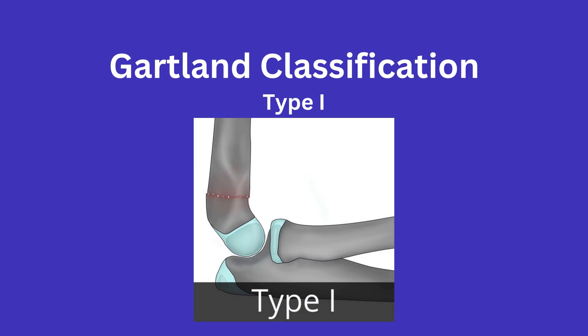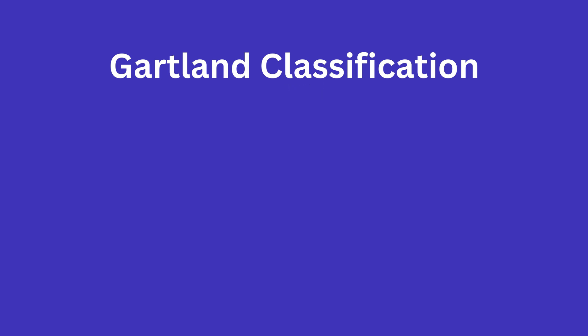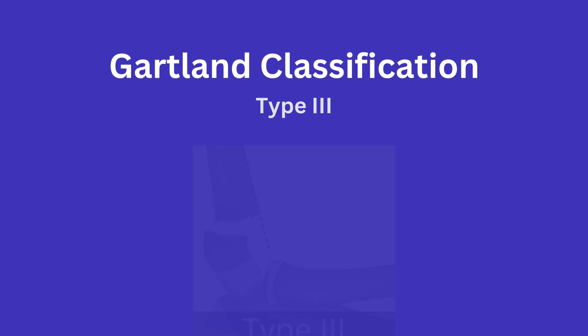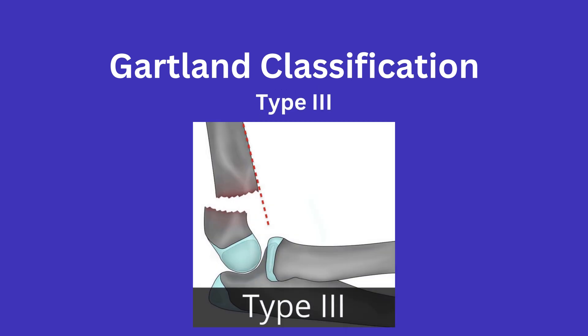Type 1 is a non-displaced or minimally displaced fracture pattern. Type 2 is displaced, however there is still an intact posterior cortex. Type 3 is completely displaced with loss of posterior cortical contact.